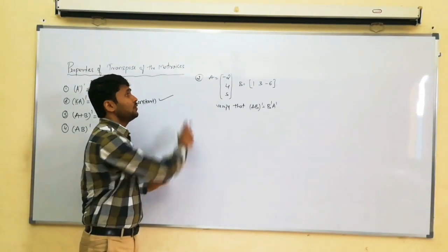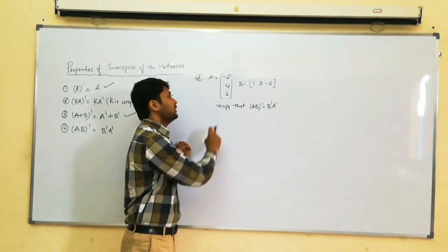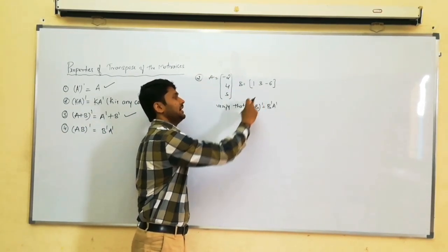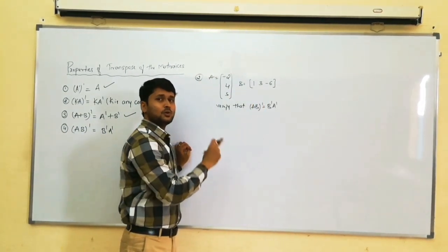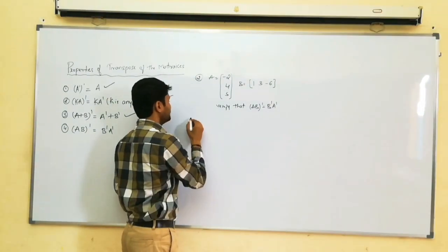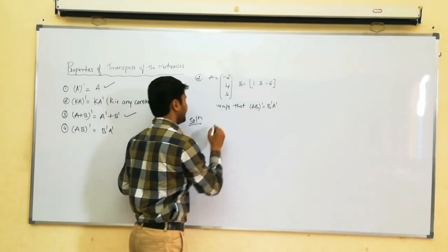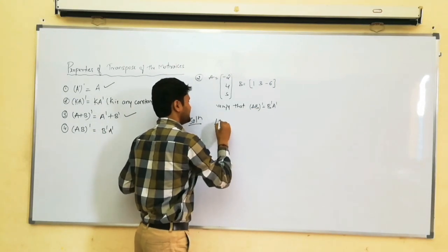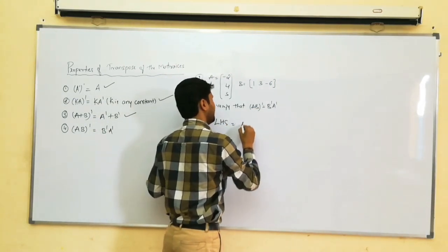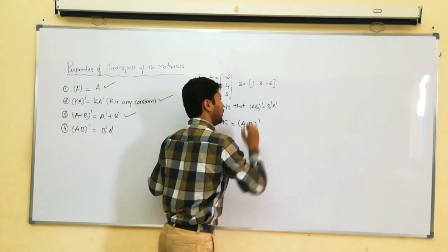Consider one more example. We are given matrix A and matrix B. We have to verify the property: A into B whole dash is equal to B dash into A dash. Go to solution. Consider LHS: A into B whole dash.